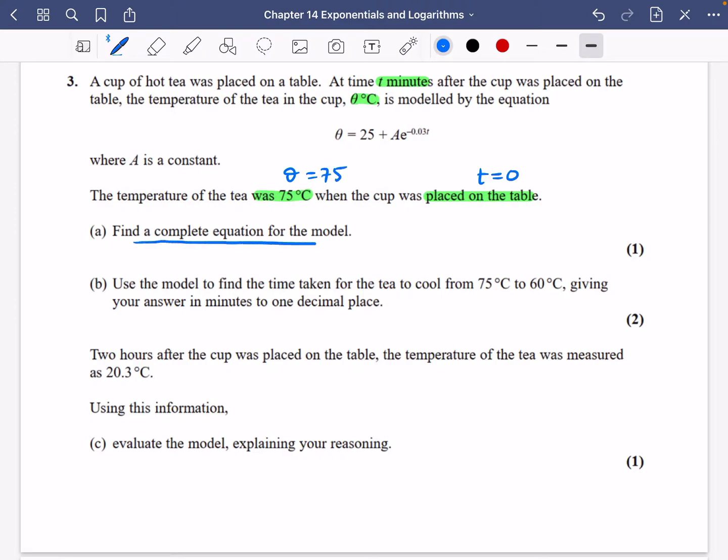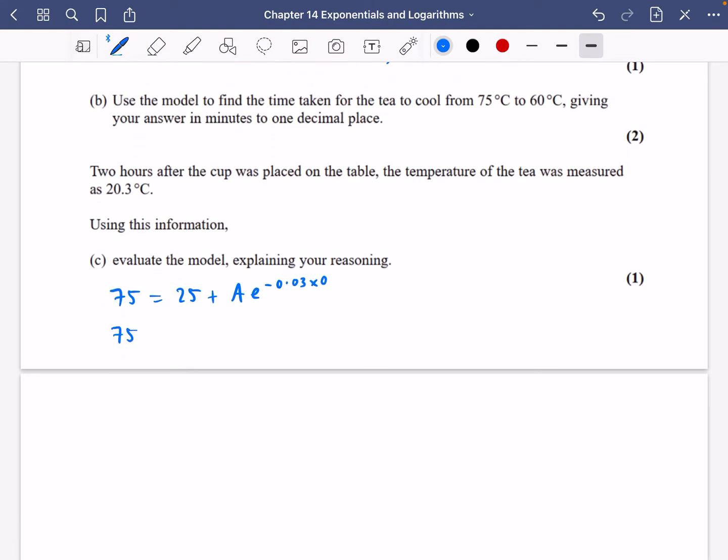When it says find a complete equation for the model, it's really asking to find the value of A. I'll take this information that theta is 75 and t is zero and substitute it in. So I get 75 = 25 + Ae^(-0.03×0). 75 minus 25 equals Ae^0, so A is just equal to 50 because e^0 is one.